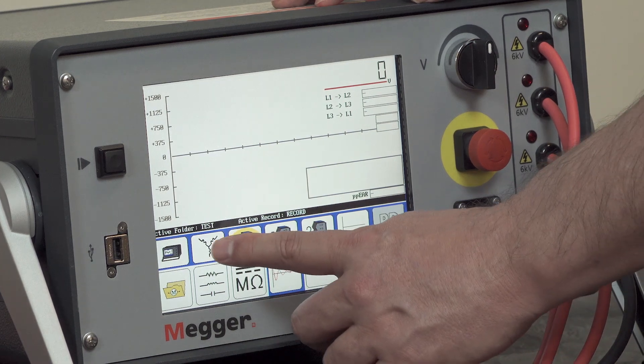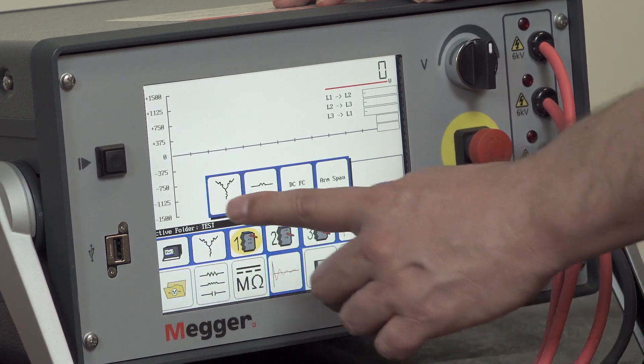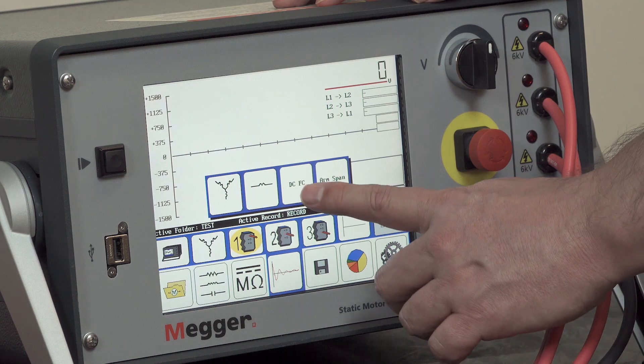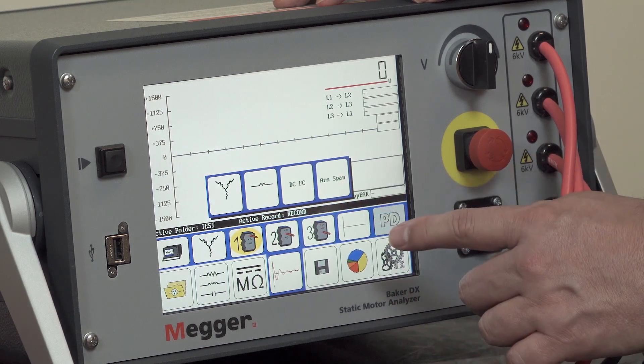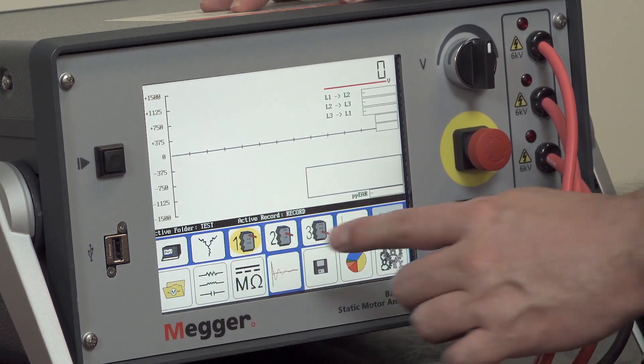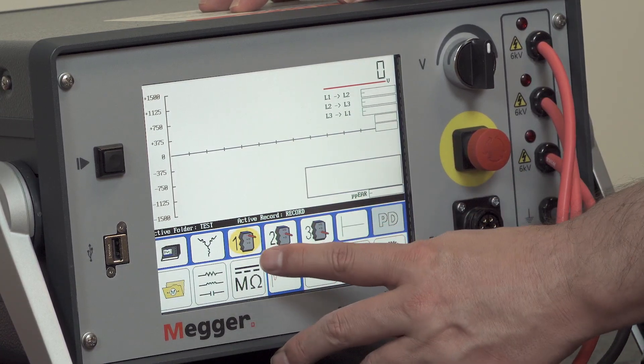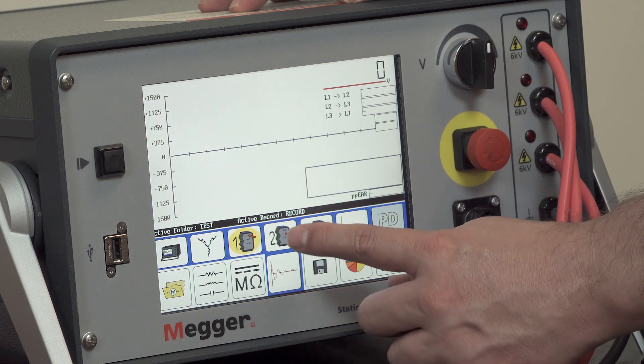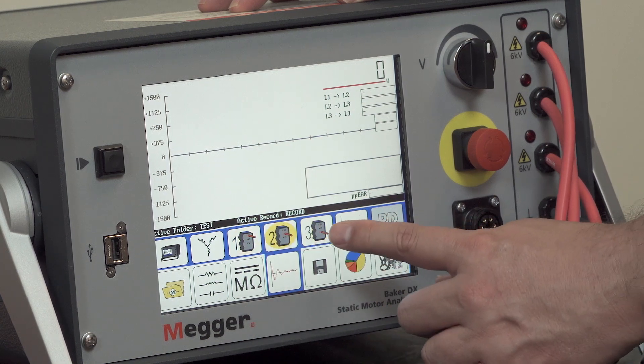The next icon is for selecting the three phase, single phase, DC field coil, or armature span test. These three buttons allow you to select which lead is energized during your surge test, allowing you to test each of the phases in turn.